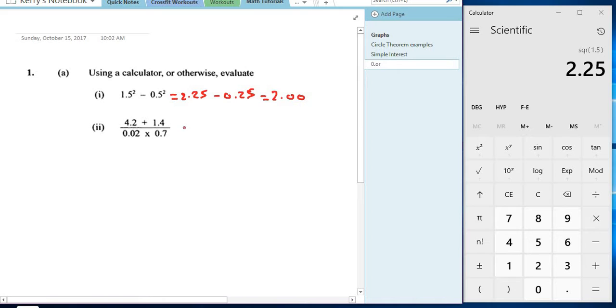The next question you have decimals, you have an addition and you have a fraction. We have 4.2 plus 1.4 over 0.02 multiplied by 0.7 at the bottom. In this case I will apply BODMAS by putting brackets around the numerator and around the denominator.